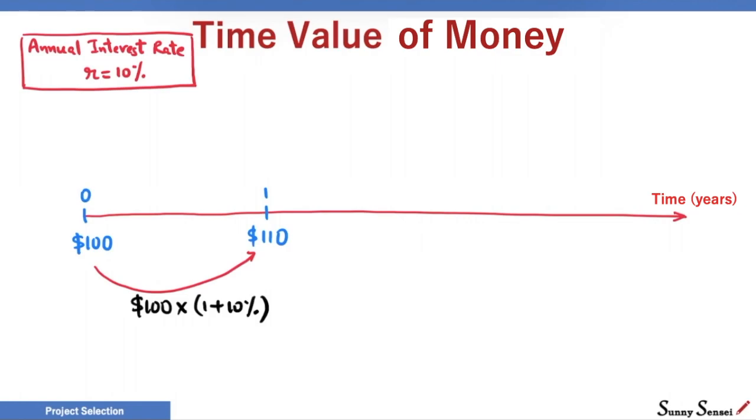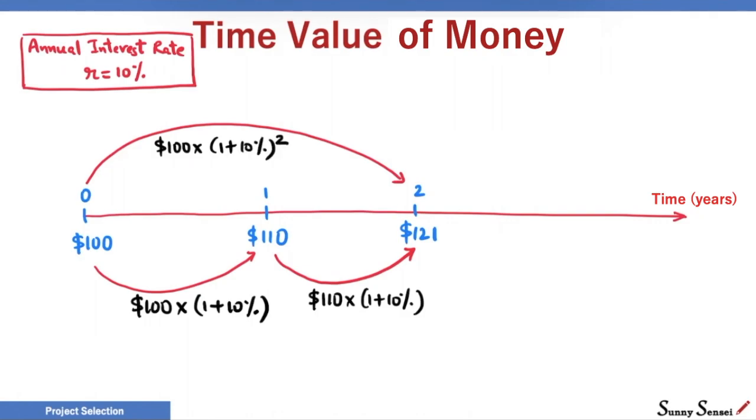If we let the money be in the bank for another year, at the end of the second year, we will have $121. We had $110 at the end of year 1. 10% interest on top of it gives us $121. In terms of the starting value of $100, this is how we get $121 at the end of the second year.